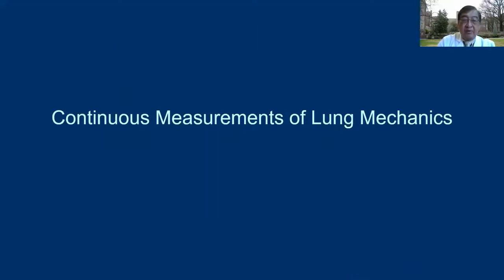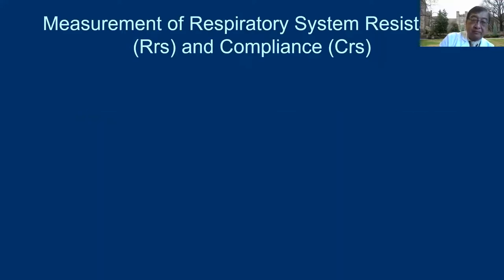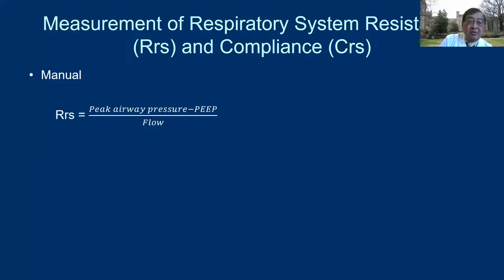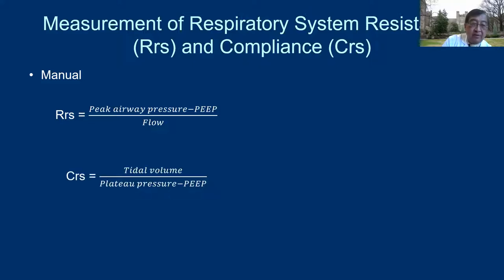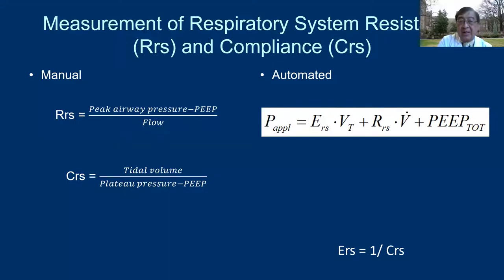Let's go into continuous measurement of mechanics for the next 20 minutes. To do that, you need to know airway resistance and compliance — these are among the most important measurements. In the past, we manually calculated them: respiratory system resistance equals peak airway pressure minus PEEP divided by flow, and compliance of the respiratory system equals tidal volume divided by plateau pressure minus PEEP. However, in automated modes, it takes advantage of the equation of motion.